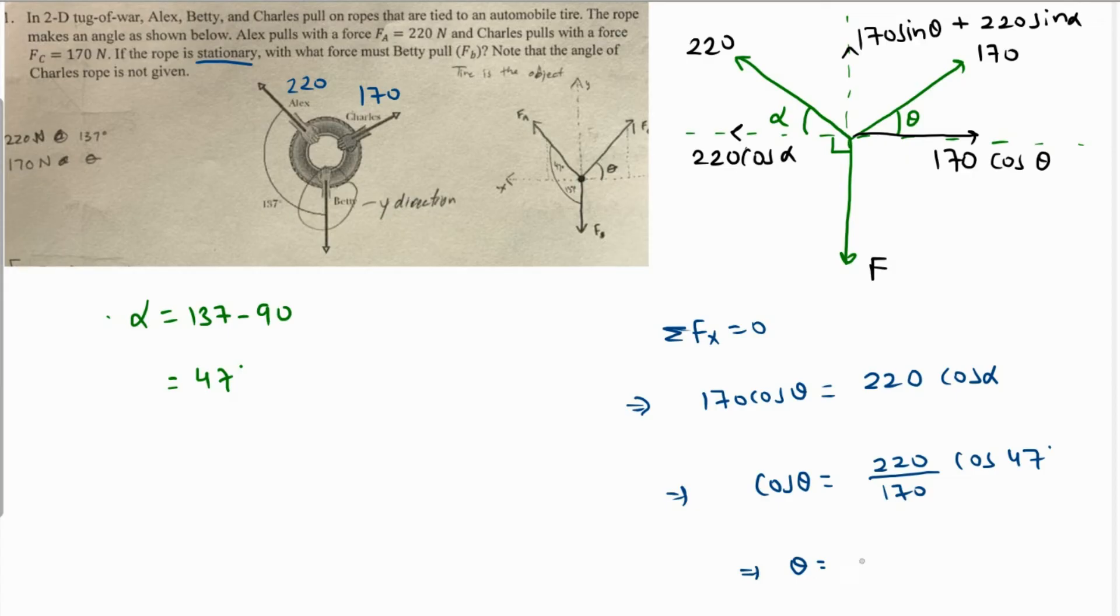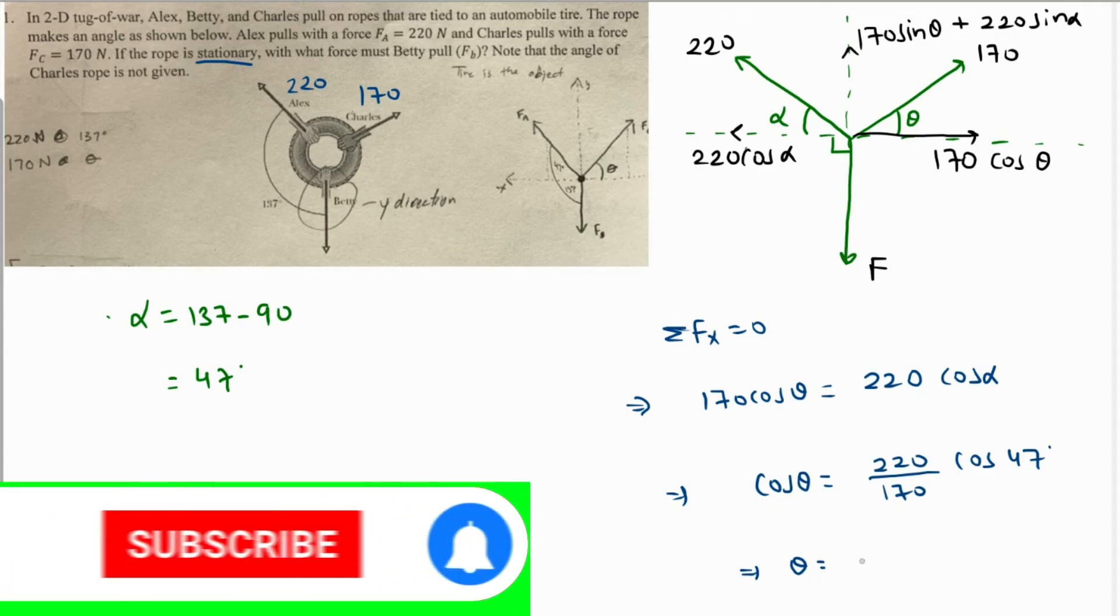Let me just grab my calculator and get the value of theta from here. Cos of 47, and the cos inverse of this value comes out as 28.04 degrees, that's the value of theta.